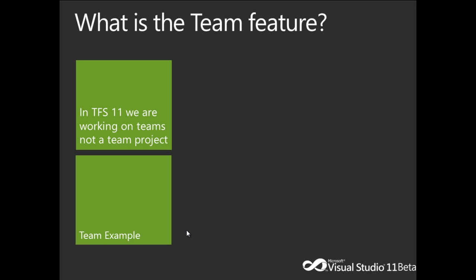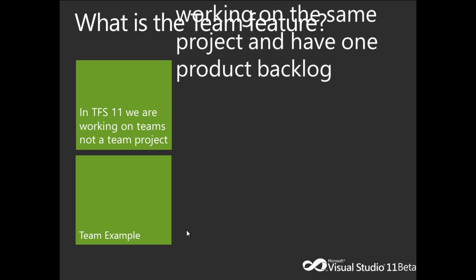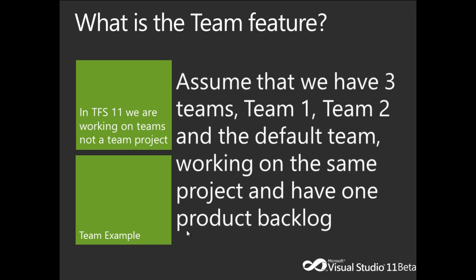To understand the team feature, let's see an example. Assume that we have three teams — Team 1, Team 2, and the default team — working on the same project and sharing one product backlog. Although they are working on the same project, each team has different members, different backlog items, different days off, and so on. All teams share the same product backlog, but each team manages its own backlog separately from other teams.